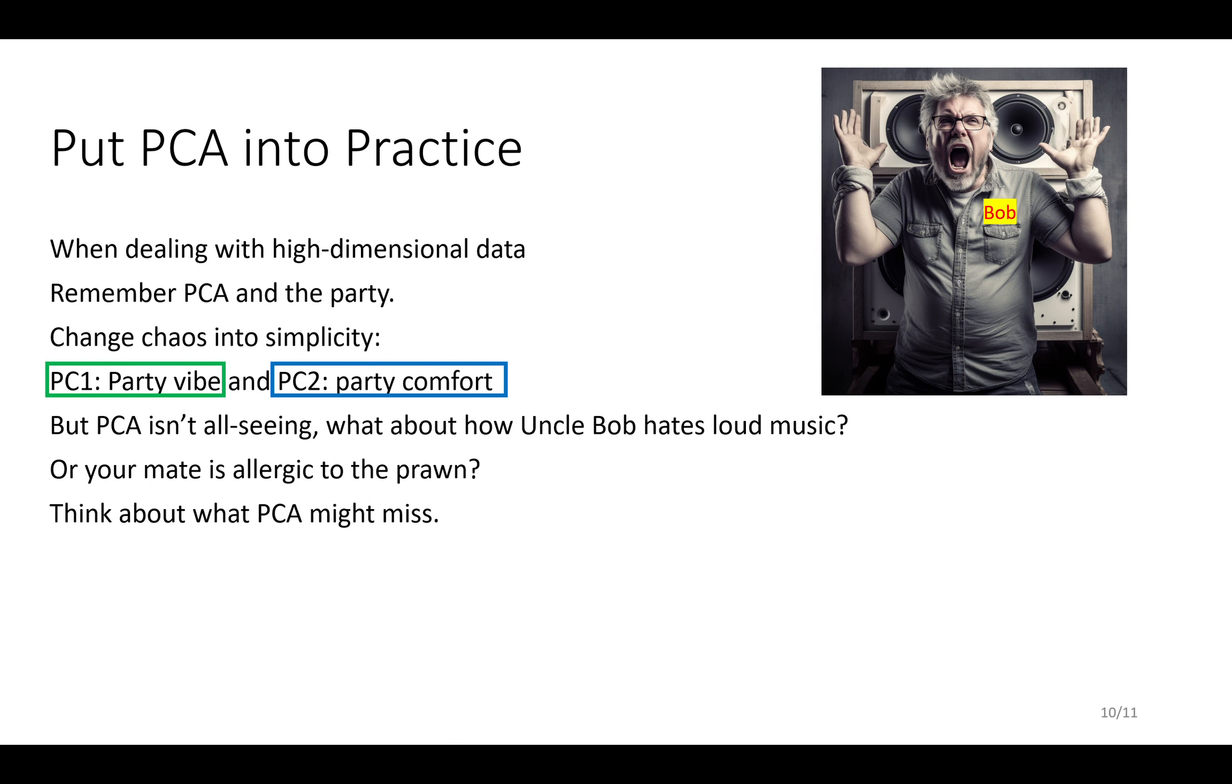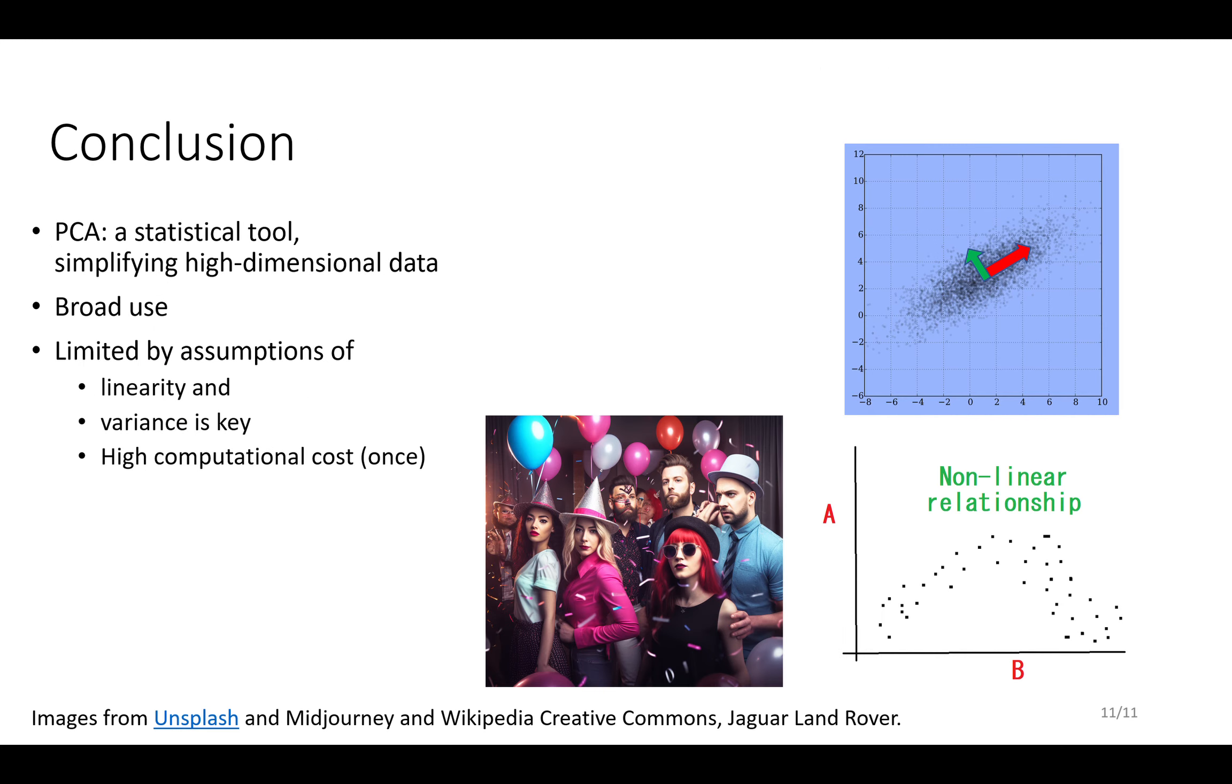It's a powerful method, powerful maths that can be used by machines, but always make sure to check it with your brain as well. In conclusion, it's a great statistical tool for reducing dimensionality. It has really broad use. I'm sure you'll come across it as you're analyzing data. It does assume linearity and that variance is the most important thing, but it does have high computational cost. Some of my images come from Midjourney AI-generated, others from Unsplash or Wikipedia. Thanks for listening, and maybe next time we can talk about other cool statistical things. Cheers.